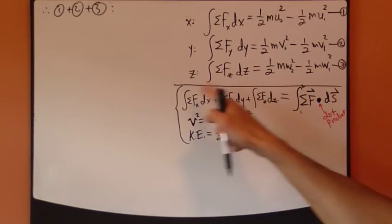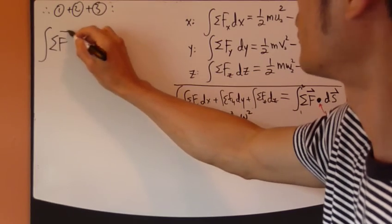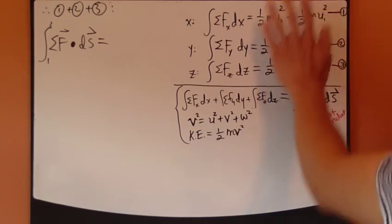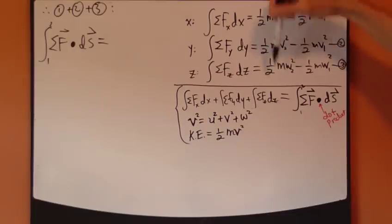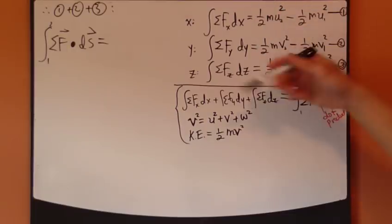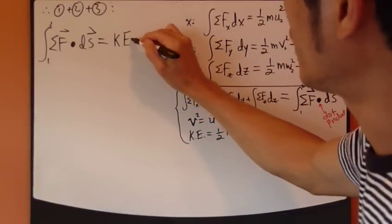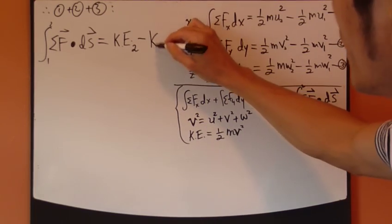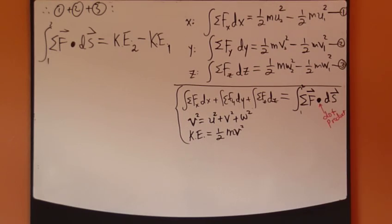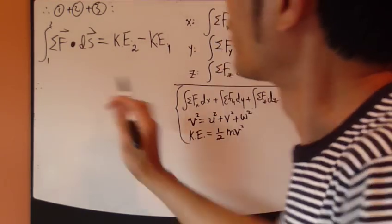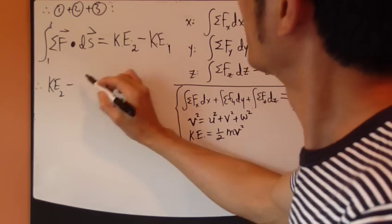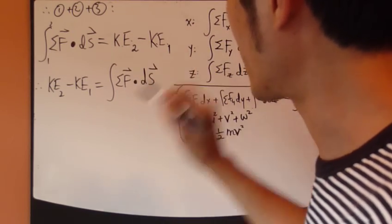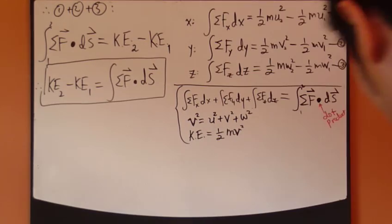So, left-hand side, what do we have? It's exactly this right here. So, we have sum of the forces dotted with s, from s1 to s2 equals right-hand side. This right here, one-half m velocity squared at the final position is exactly kinetic energy at position two minus sum of these, which is kinetic energy at position one. So, we can rewrite this. Swap left-hand and right-hand side. That's it. This is your work energy equation.